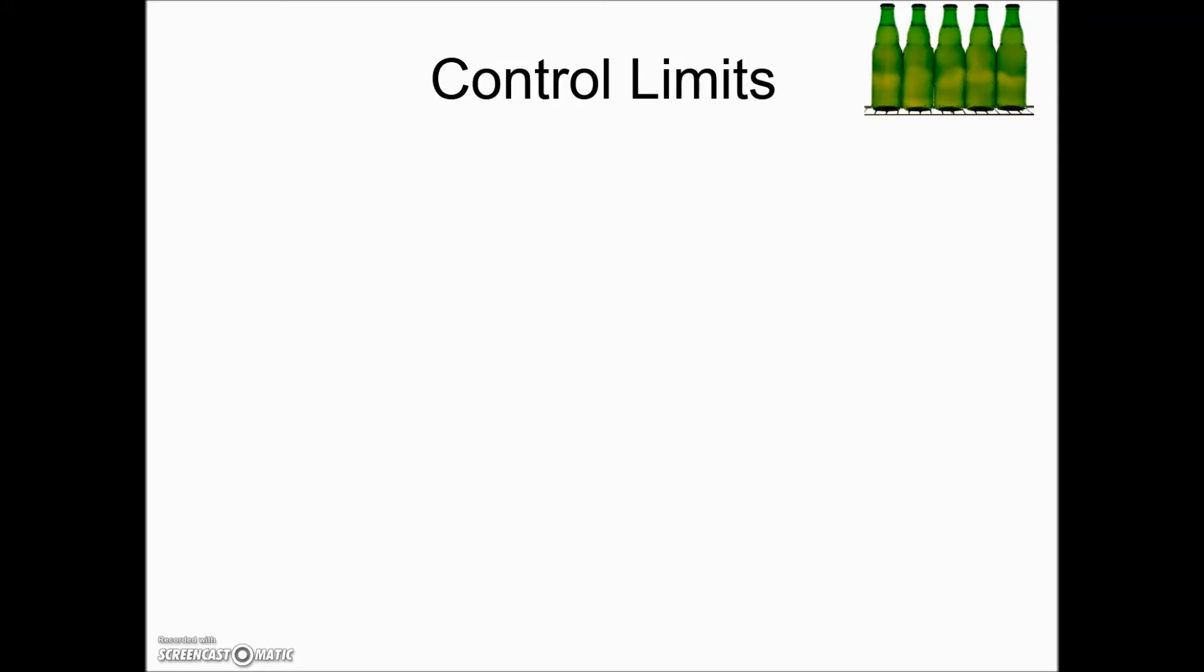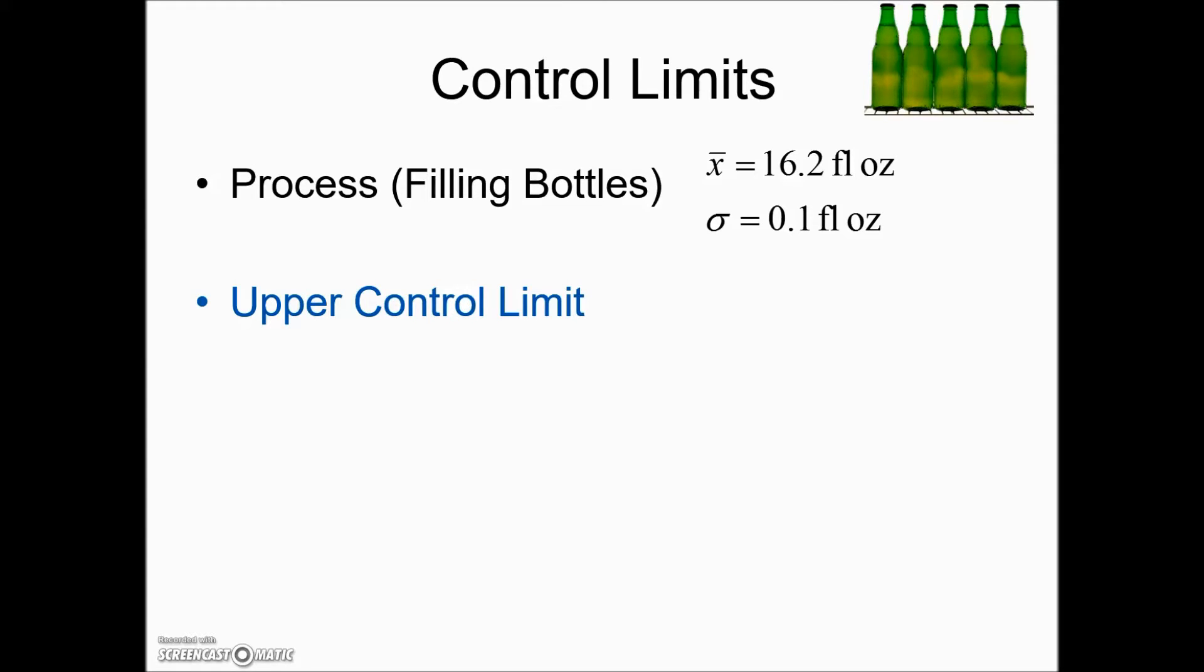Excessive variations mean that many parts will be made that cannot be used or sold. Let's look at filling some pop bottles. After taking some samples and calculating the following values, we have a mean of 16.2 and a standard deviation of 0.1 fluid ounces. To find the upper control limit or the UCL, we take the mean plus three times the standard deviation. And for the lower control limit, we take the mean minus three times the standard deviation.